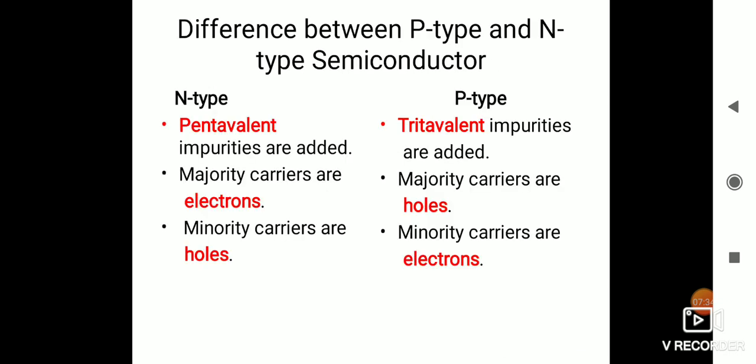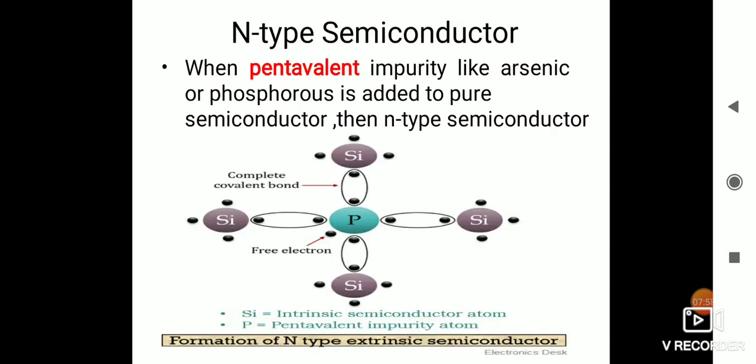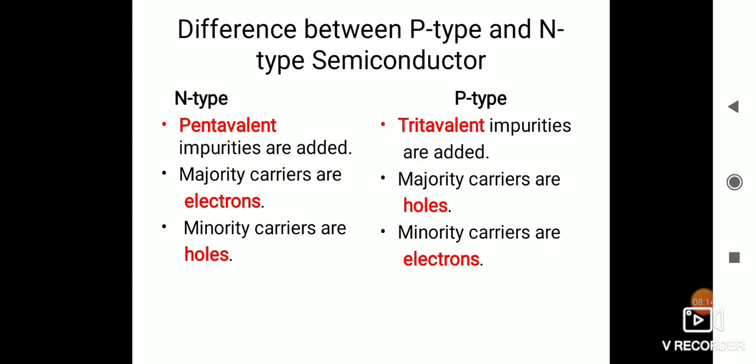Let us see the difference between P-type and N-type semiconductor. In N-type semiconductor, pentavalent impurities are added — that is atoms with five electrons in the outermost shell. In P-type, trivalent impurities are added. In N-type semiconductor, the majority carriers are electrons. The number of phosphorus atoms added to silicon determines the corresponding number of free electrons created. Hence, majority carriers are electrons in N-type. Similarly, in P-type, majority carriers are holes. In N-type, if the majority is electrons, the minority will be holes. And in P-type, it is vice versa — majority is holes, hence minority will be electrons. These are the basics of P-type and N-type semiconductors. Thank you.